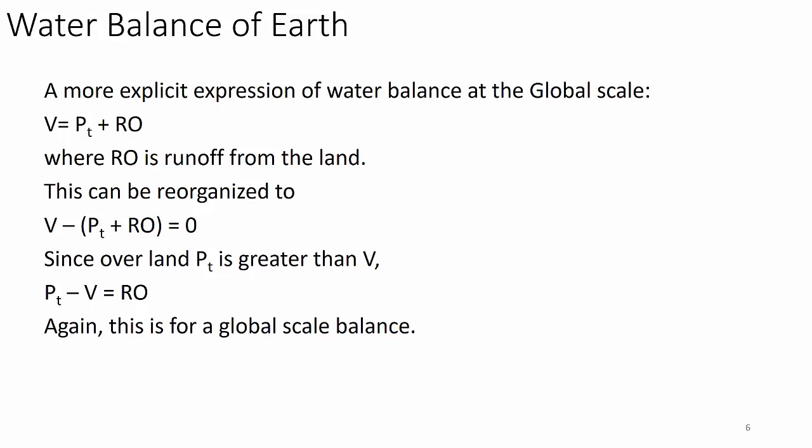A more explicit expression of the water balance at the global scale: water vapor in the atmosphere equals precipitation plus runoff from the land (RO). You can organize that as V equals P plus RO, or V minus P plus RO equals zero. Since overland precipitation is greater than evaporation, Pt minus V over land equals RO — that's why we have rivers and streams. In areas where V is greater than precipitation, there's no runoff. We call those deserts.